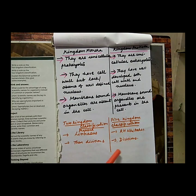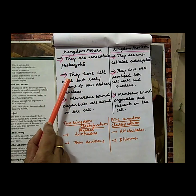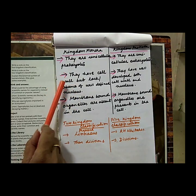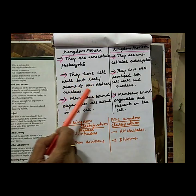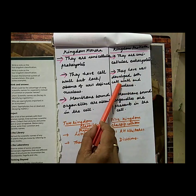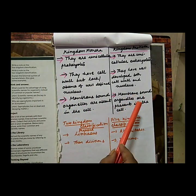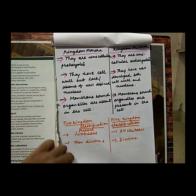For the differentiation between kingdom Monera and kingdom Protista, you can pause the video to read the three points written for each. Monera: unicellular prokaryotes; have cell wall but lack a well-defined nucleus; membrane-bound organelles are absent. Protista: unicellular eukaryotes; have both cell wall and well-defined nucleus; membrane-bound organelles are present.